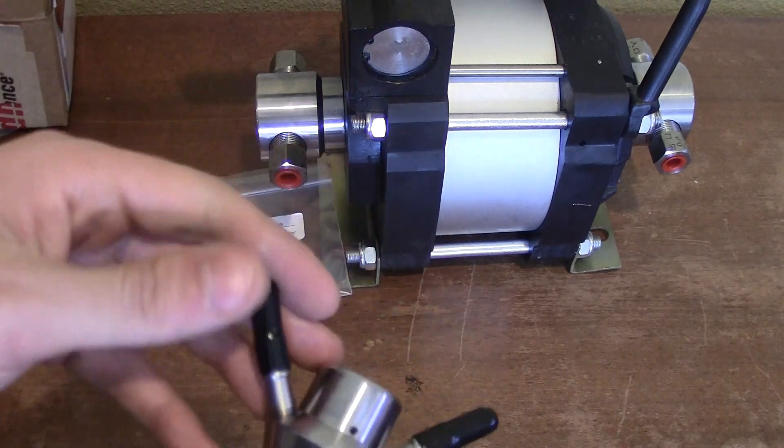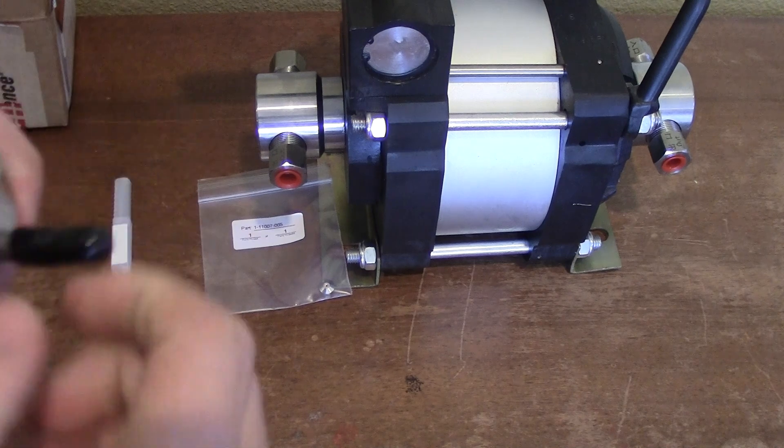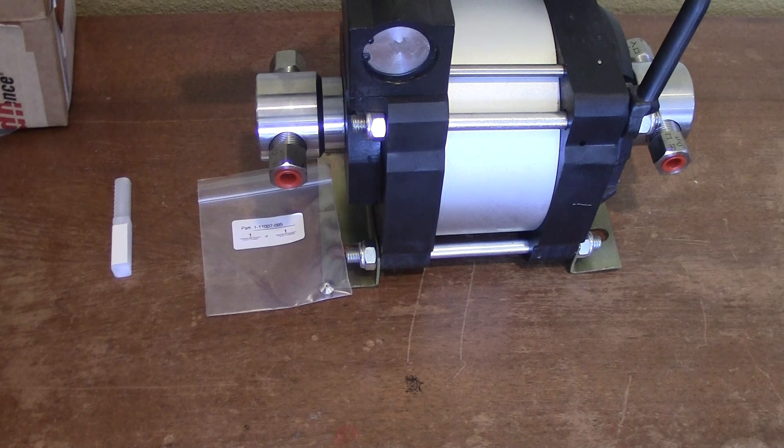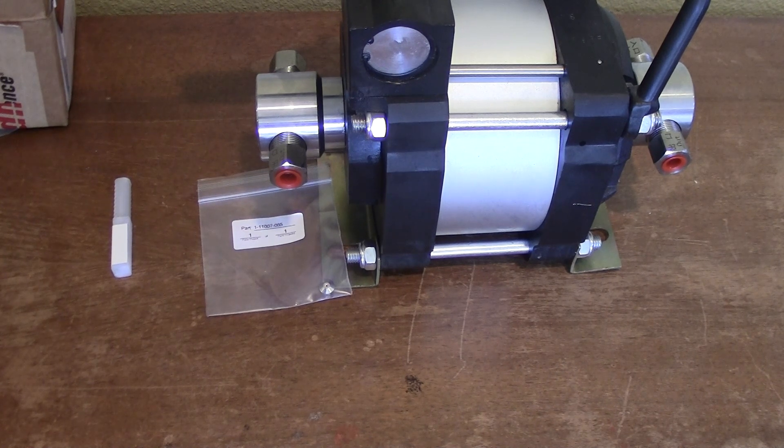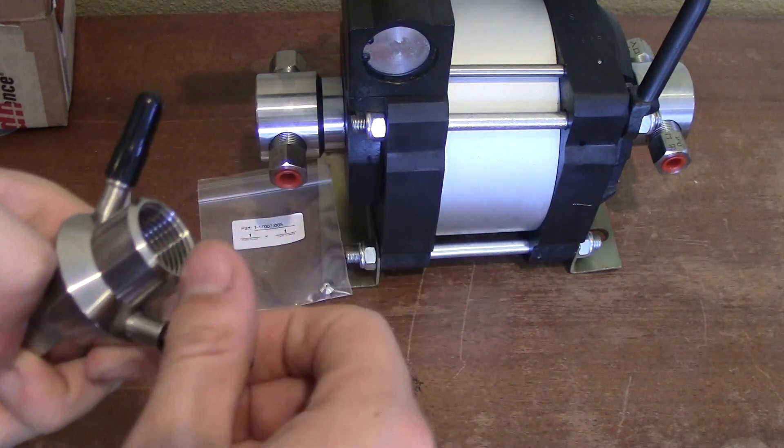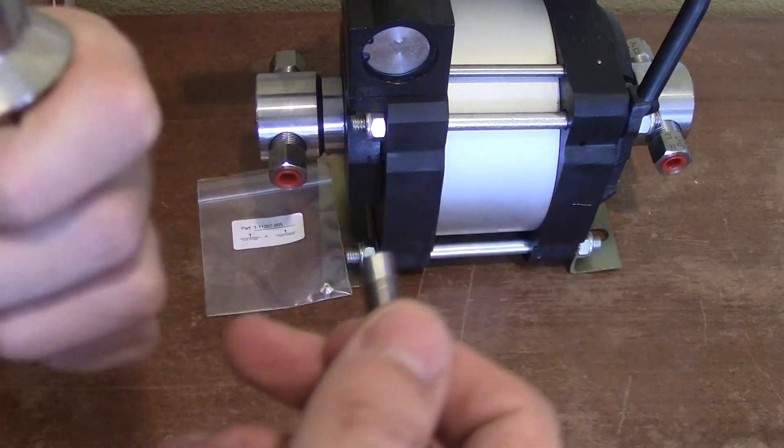So this one has two different attachments, two different options here. I don't know why it has two different options. I don't think they're different. I might just take this out, which it just unthreads and then plug that hole.